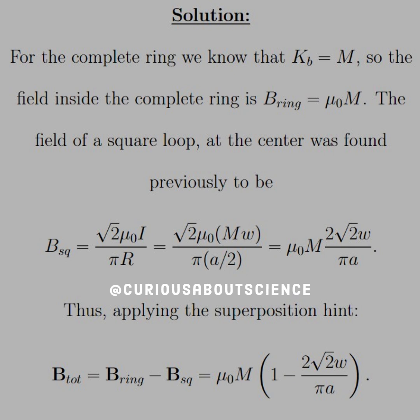But, in applying the superposition hint, we need to put this as a negative, the current goes in the negative direction. So, below, instead of adding M to find the total field, we take the B ring minus the square field. And when we do that, we can factor out a mu not M, and we see that we have 1 minus 2 root 2 W over pi A.